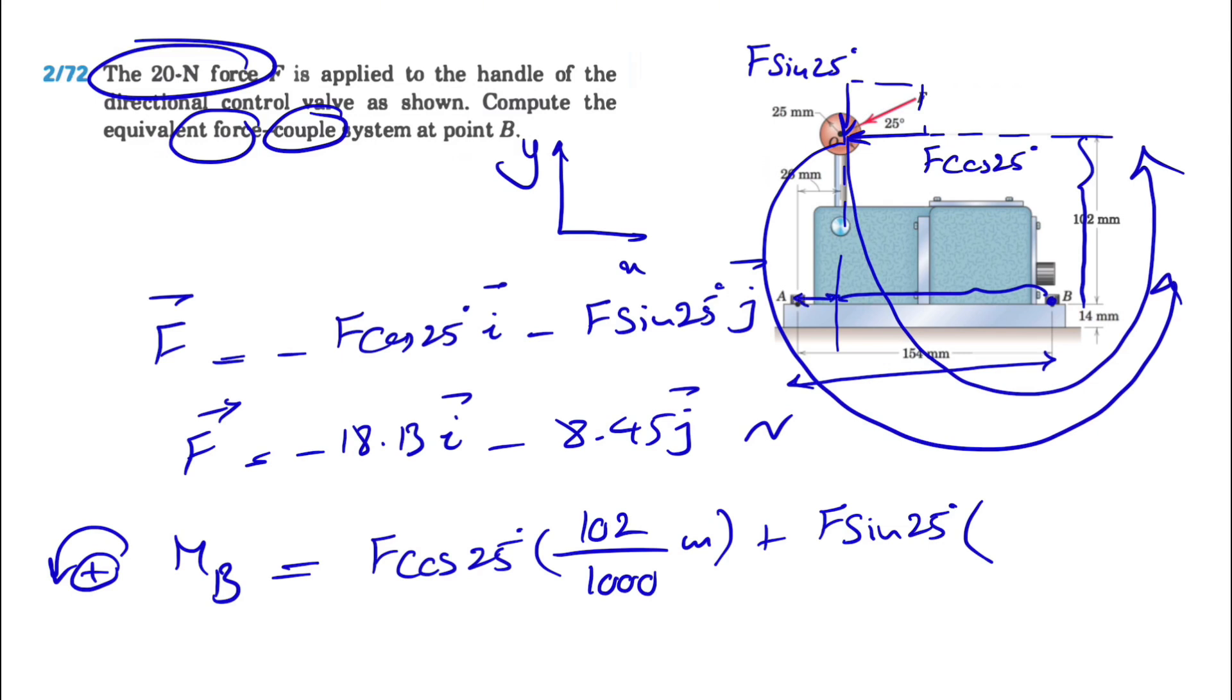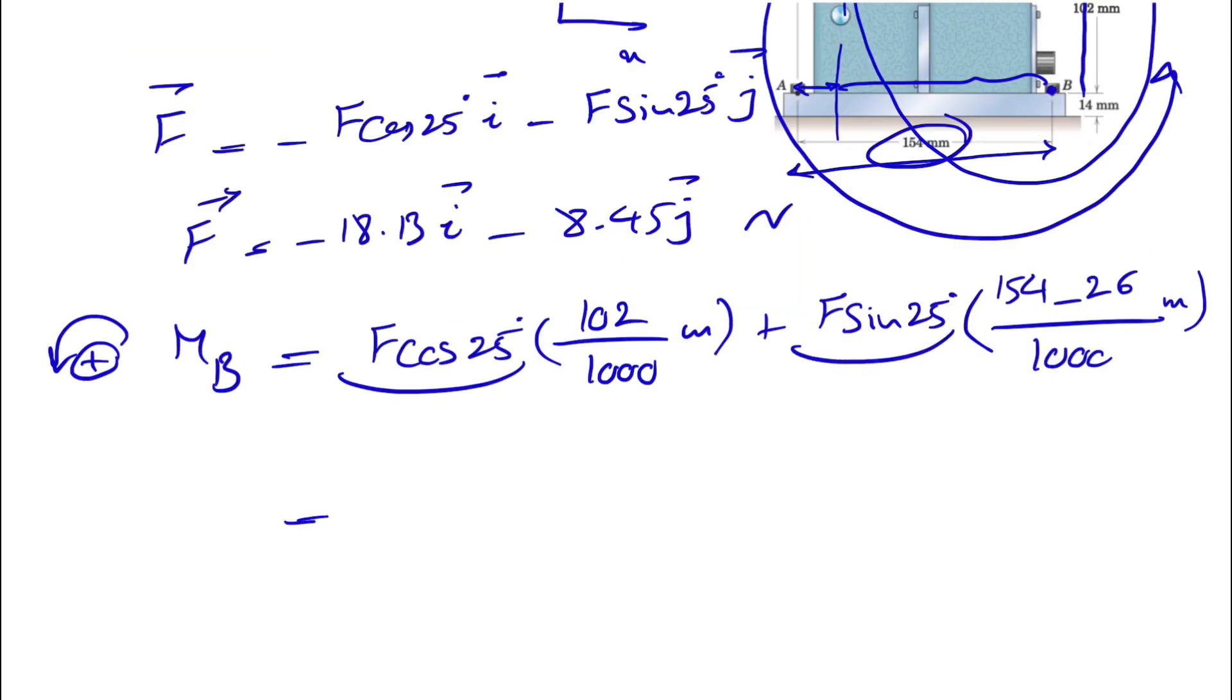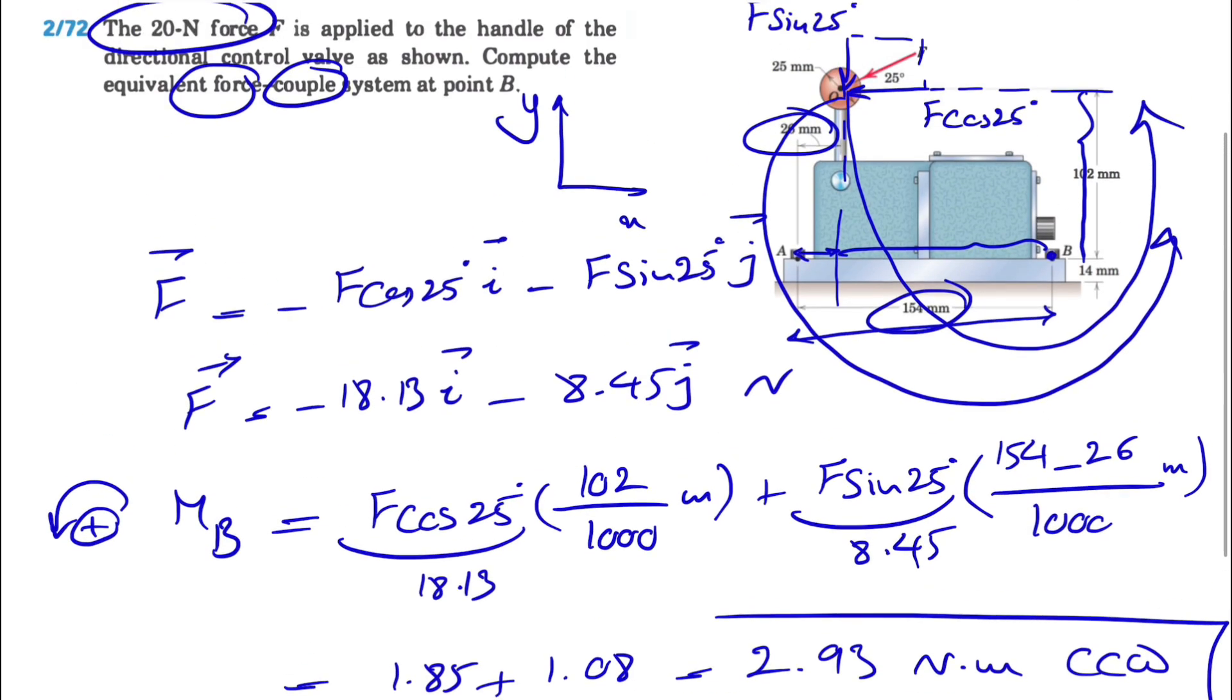So we have this 26 and this 154. If we subtract these two, we get the distance from the y component to point B, divided by 1000 to get meters. We found these parts from the previous step, 18.13 and 8.45. If we calculate this, we get 1.85 plus 1.08, which gives us 2.93 Newton meters.